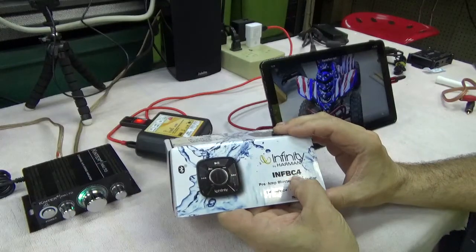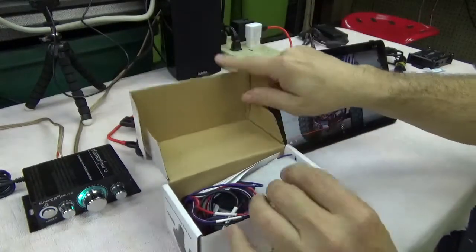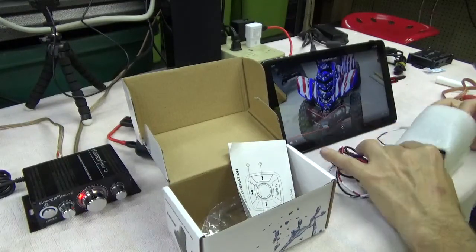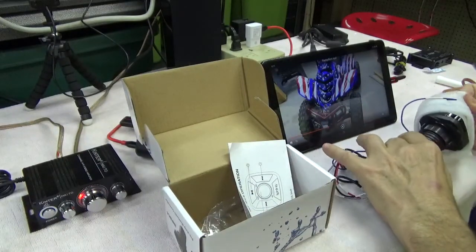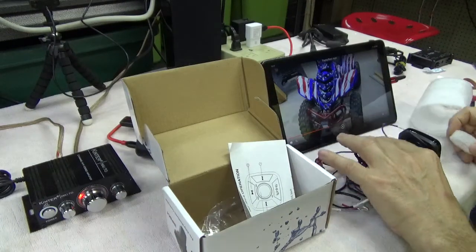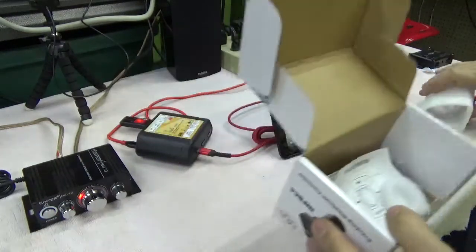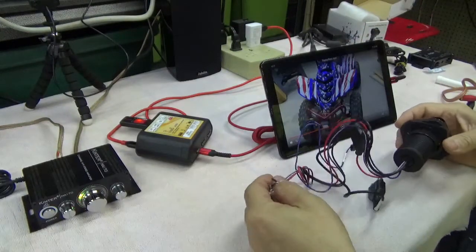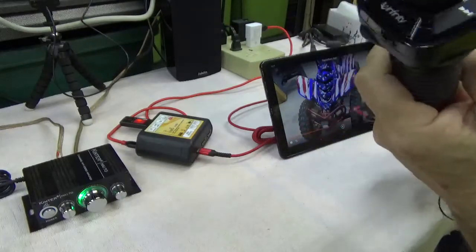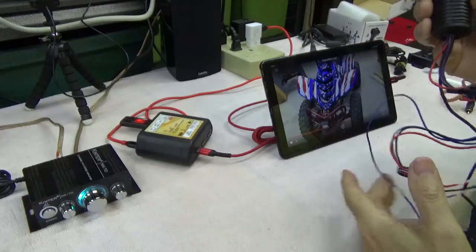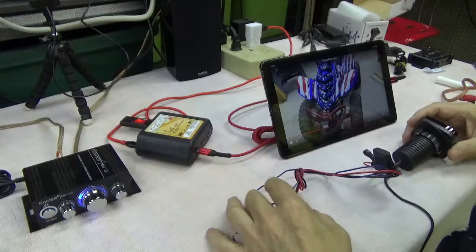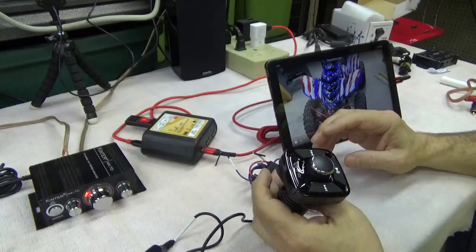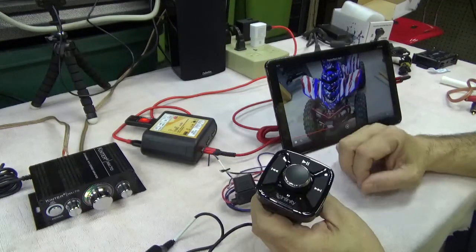But then I found this Infinity model, the Infinity INF-VC4. Now, this unit is really nice. I contacted Infinity to get the specifications of the unit, and they kind of aren't sure what version of Bluetooth it has. They told me it has SBC for the audio codec, which is okay. I wish they had put a newer codec into it. And it gives you about one and a half volts RMS on the output, which I wish was a little higher.